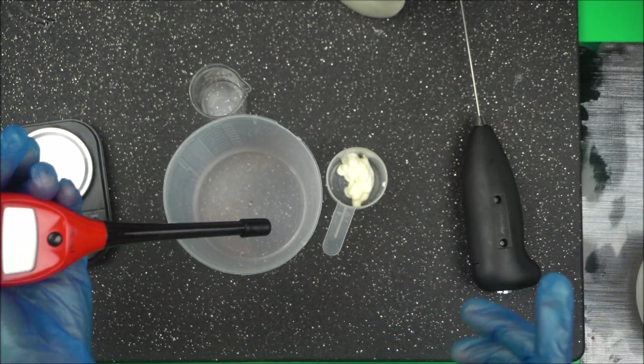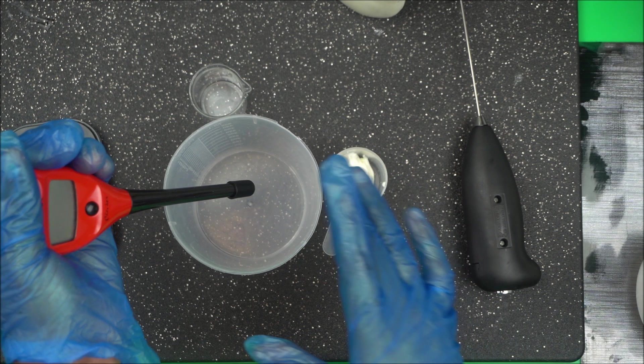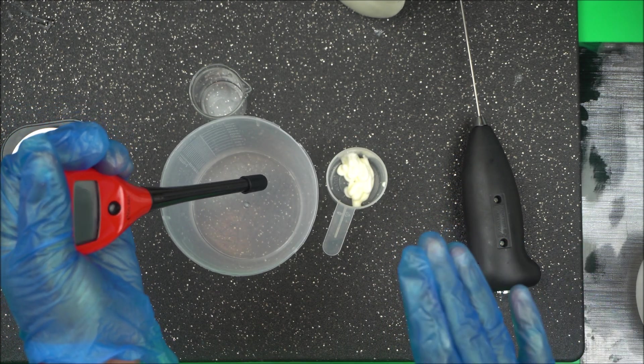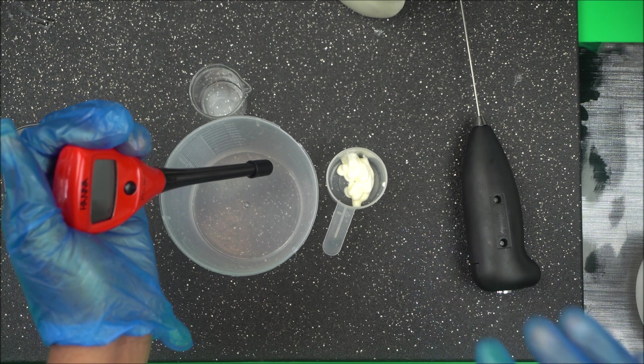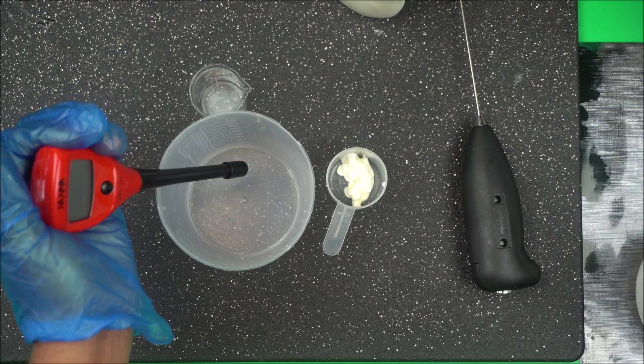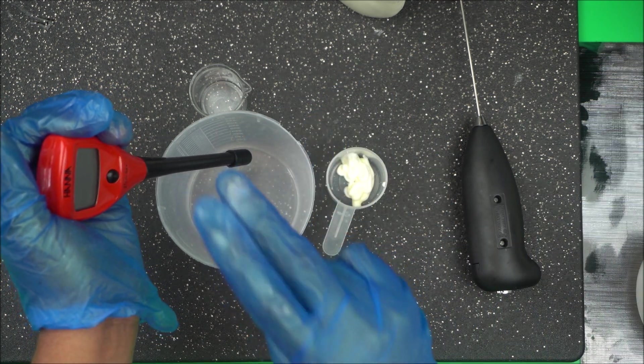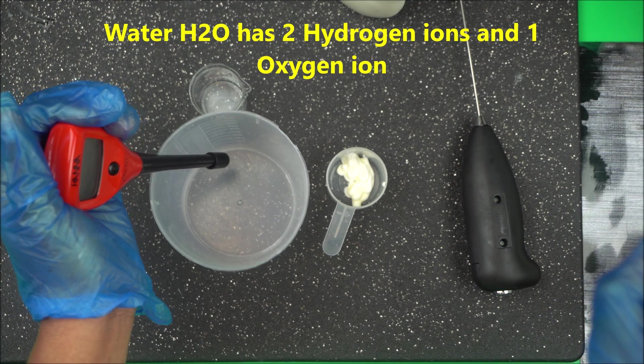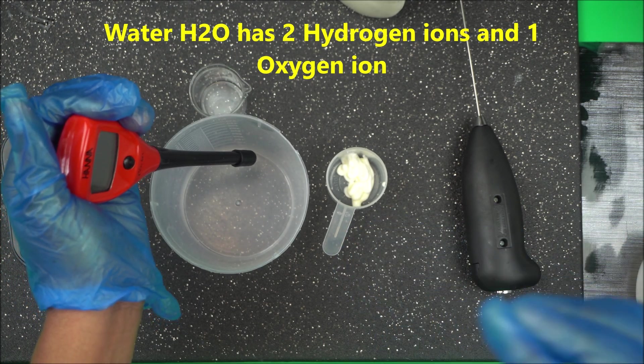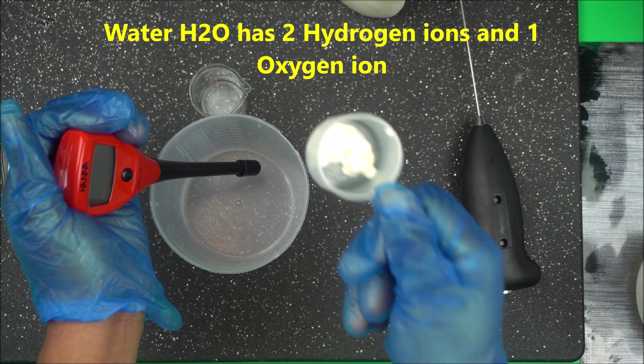Let me tell you something about pH. pH is the measure of the potential hydrogen ion in your product, and there's no way you can properly check this without dissolving it in H2O water. Remember, water H2O has two hydrogen ions and one oxygen ion.